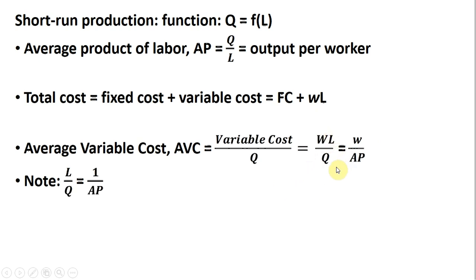We recognize that L divided by Q is nothing more than the reciprocal of the average product of labor. So L divided by Q is just one over average product. We make that substitution and we have the firm's average variable cost equation. Let's do a numerical example.